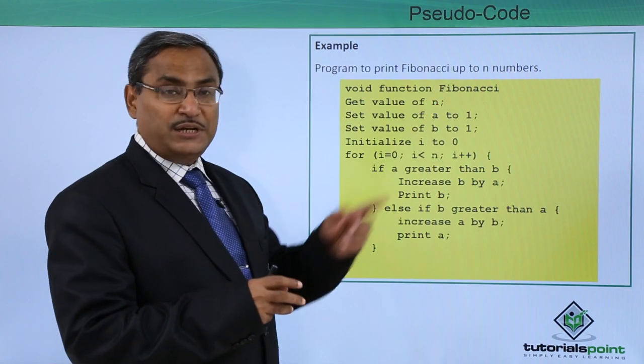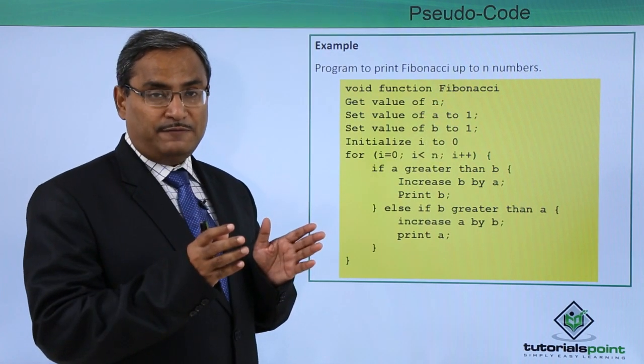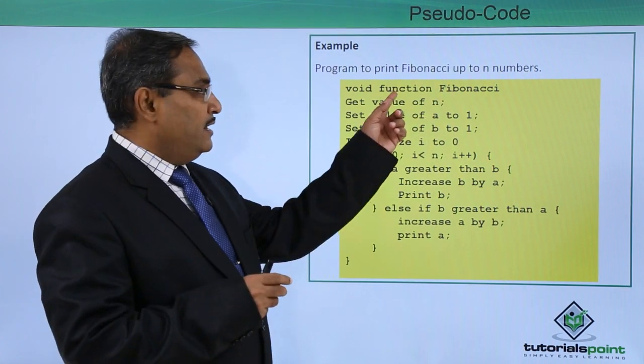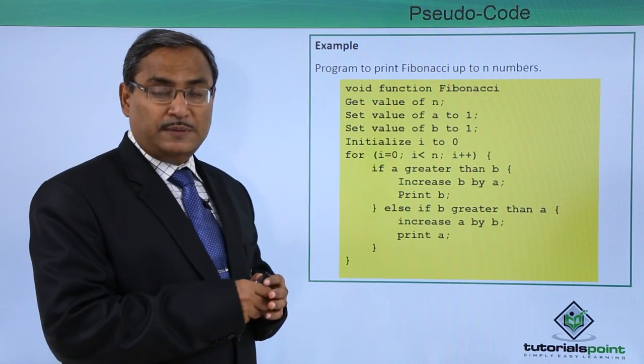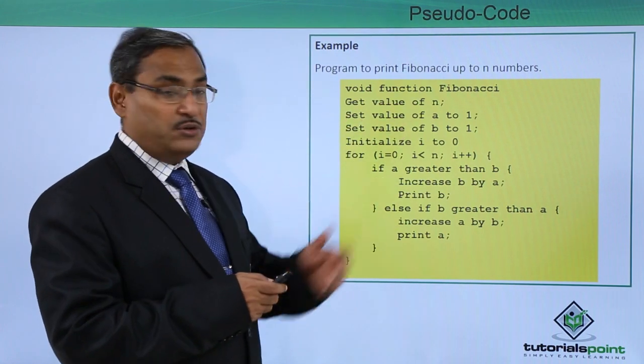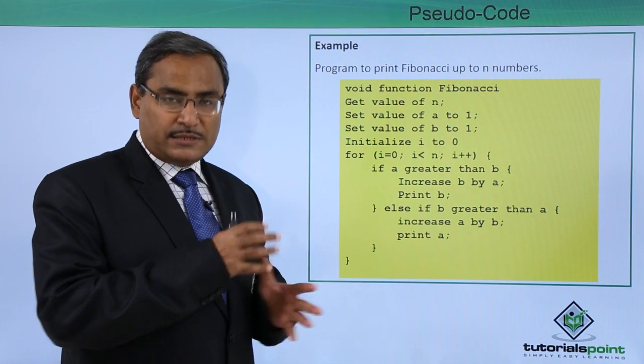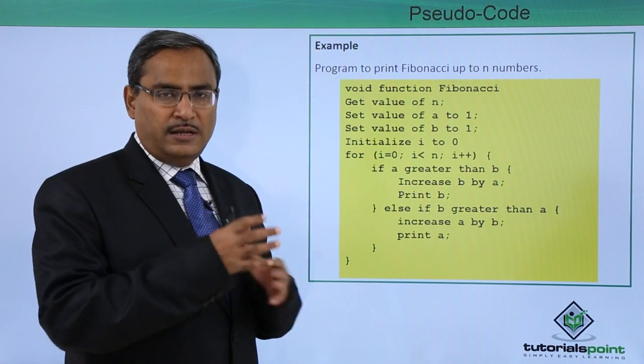You see after the function name, there is no opening bracket, first bracket and closing first bracket. The function keyword is not there in our respective C programming. In Fortran, the function keywords are there. It is a mixture of C, Pascal and Fortran program paradigm.